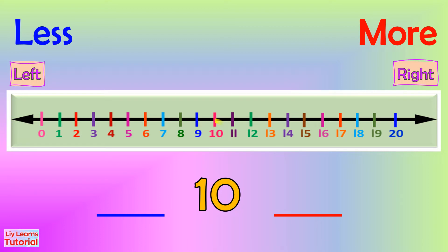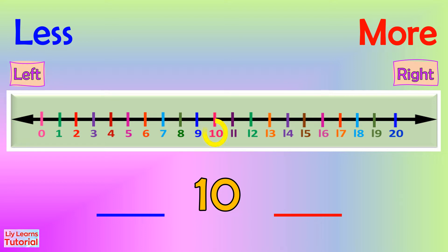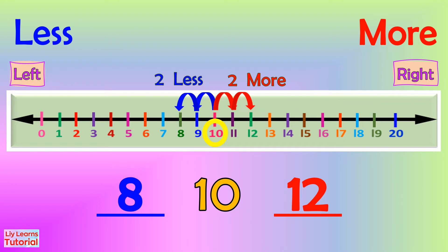Given the number 10 as the reference number: 1 more of 10 is 11, and 1 less of 10 is 9. Given the number 10 as the reference number: 2 more of 10 is 12, and 2 less of 10 is 8. Using this strategy, you can find out 3 more and 3 less, 4 more and 4 less, 5 more and 5 less, and so on.